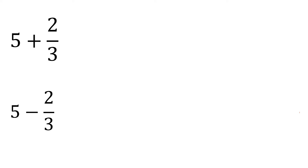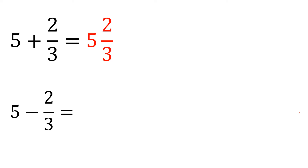Now, what if it's a whole number plus a fraction? For addition — five plus two-thirds — you just copy the whole number and put the fraction alongside it. So just put them together and the answer is five and two-thirds.